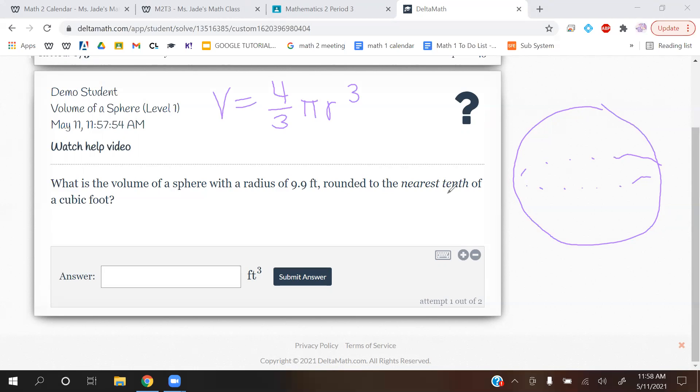It says, what is the volume of a sphere with a radius of 9.9 feet? The radius is 9.9. This is your radius. That's the only thing you need for this formula, you just need the radius. So let's plug it in. You have 4 thirds pi 9.9 cubed.